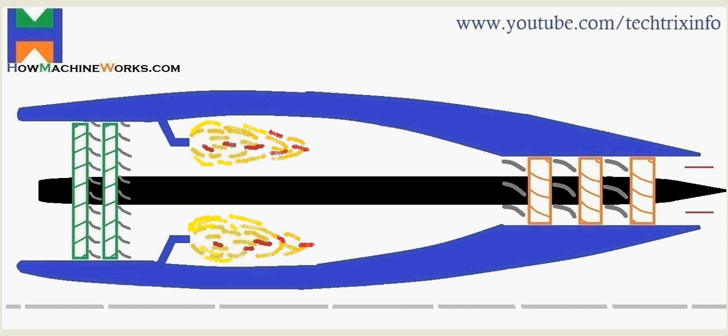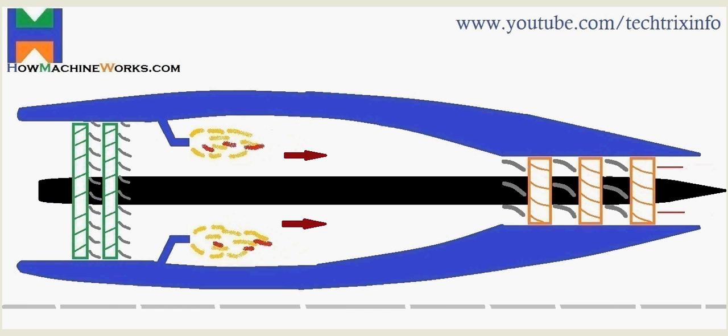So here the combustion inside the engine is happening. When the combustion happens high pressure air is being emitted outside from the engine it travels through the turbine blades which results in the turbine blades to rotate.